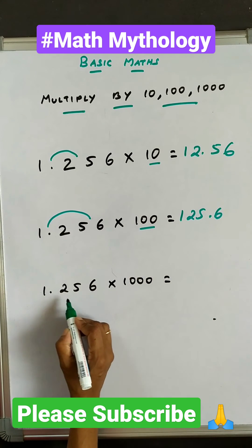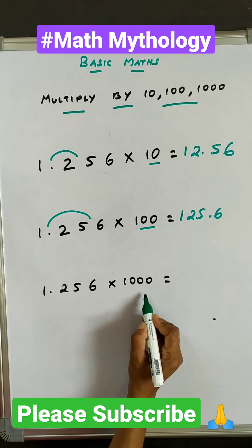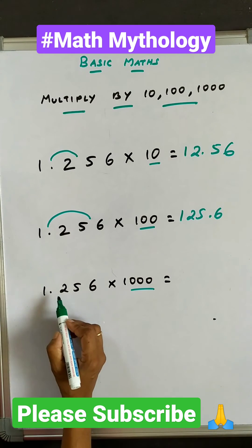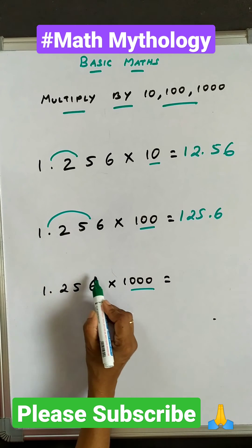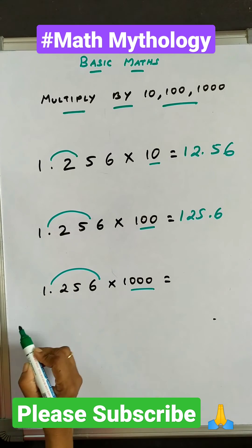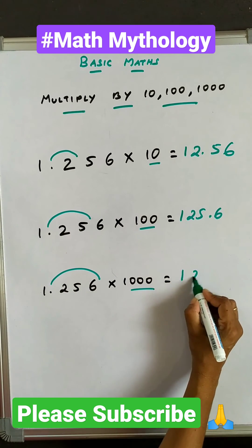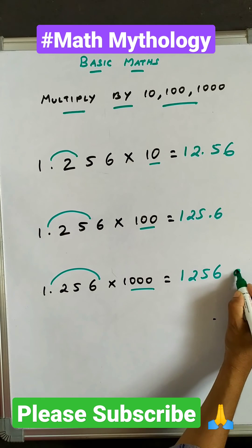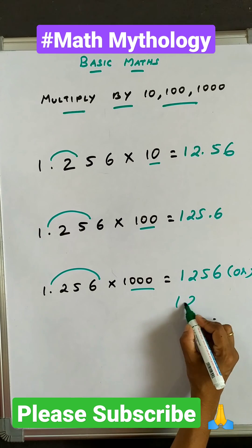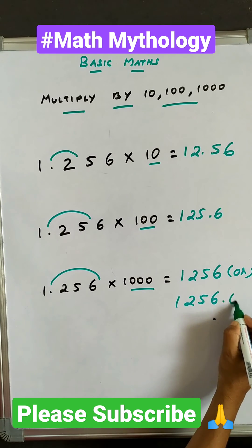Next, when we multiply 1.256 by 1000, in 1000 we have three zeros. So move the decimal number towards the right after three numbers. We get 1256, or we can write it as 1256.0.